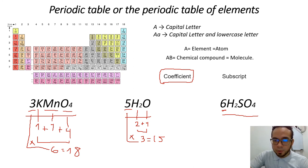And, the last one, we have two hydrogens, one sulfur, and four oxygen. So, four plus one plus two is seven atoms.